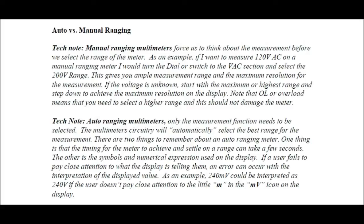With auto ranging multimeters, only the measurement function needs to be selected — the multimeter circuitry will automatically select the best range. There are two important things to remember: first, the timing for the meter to settle on a range can take a few seconds. Second, pay close attention to the symbols and numerical expressions on the display. For example, 240 mV could be interpreted as 240 V if the user doesn't notice the lowercase 'm' in the mV icon. We need to pay very close attention to this.